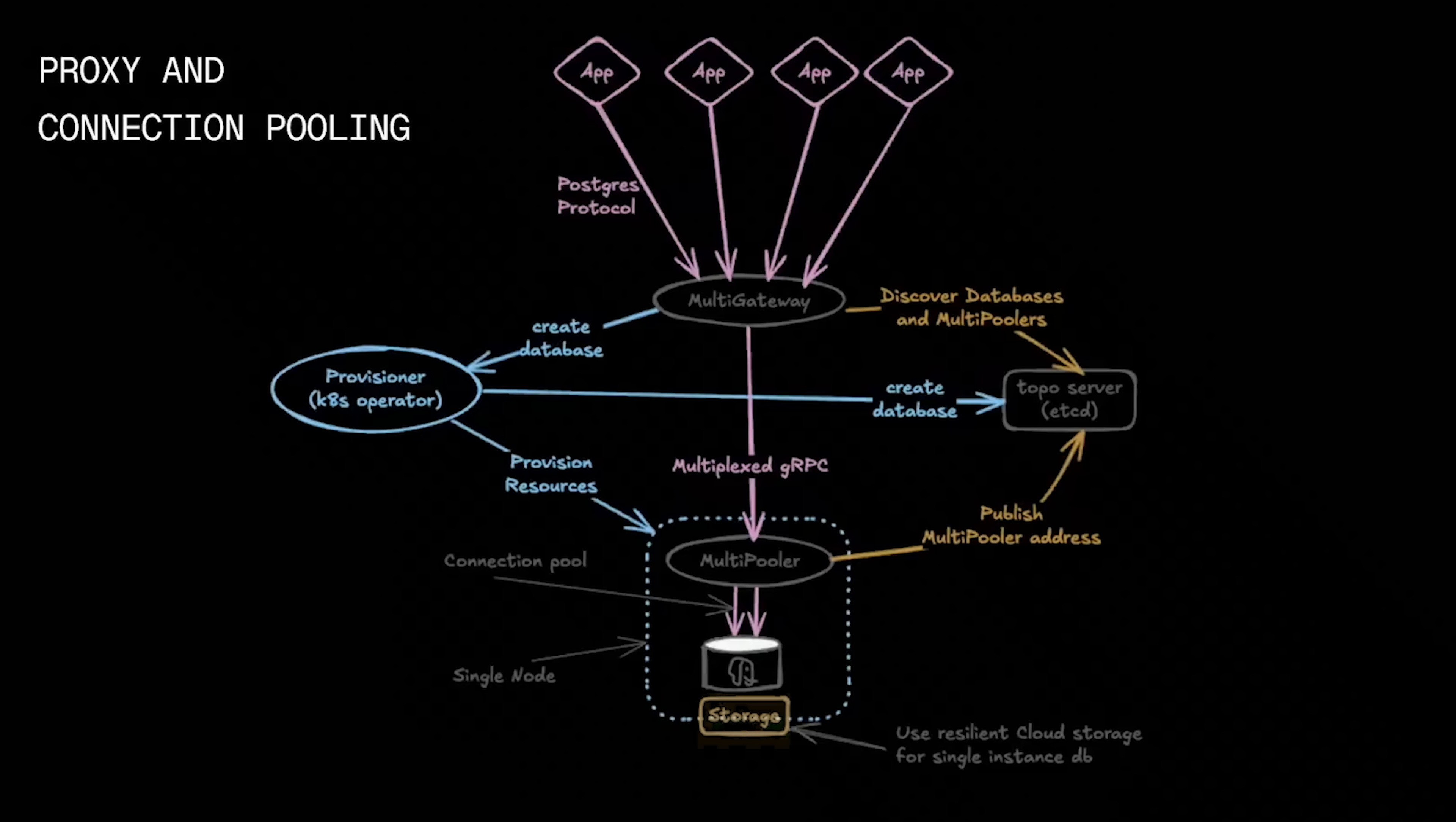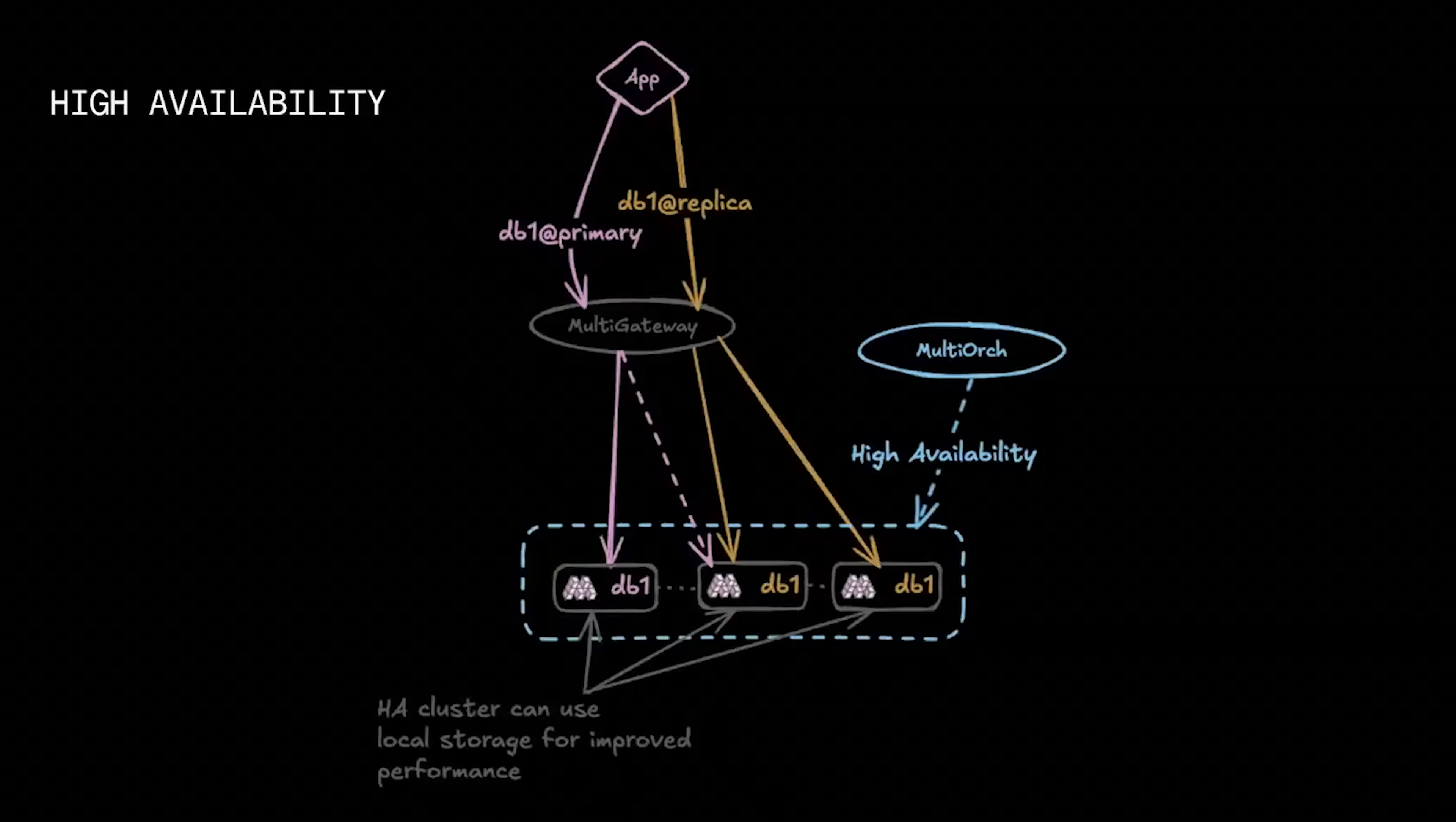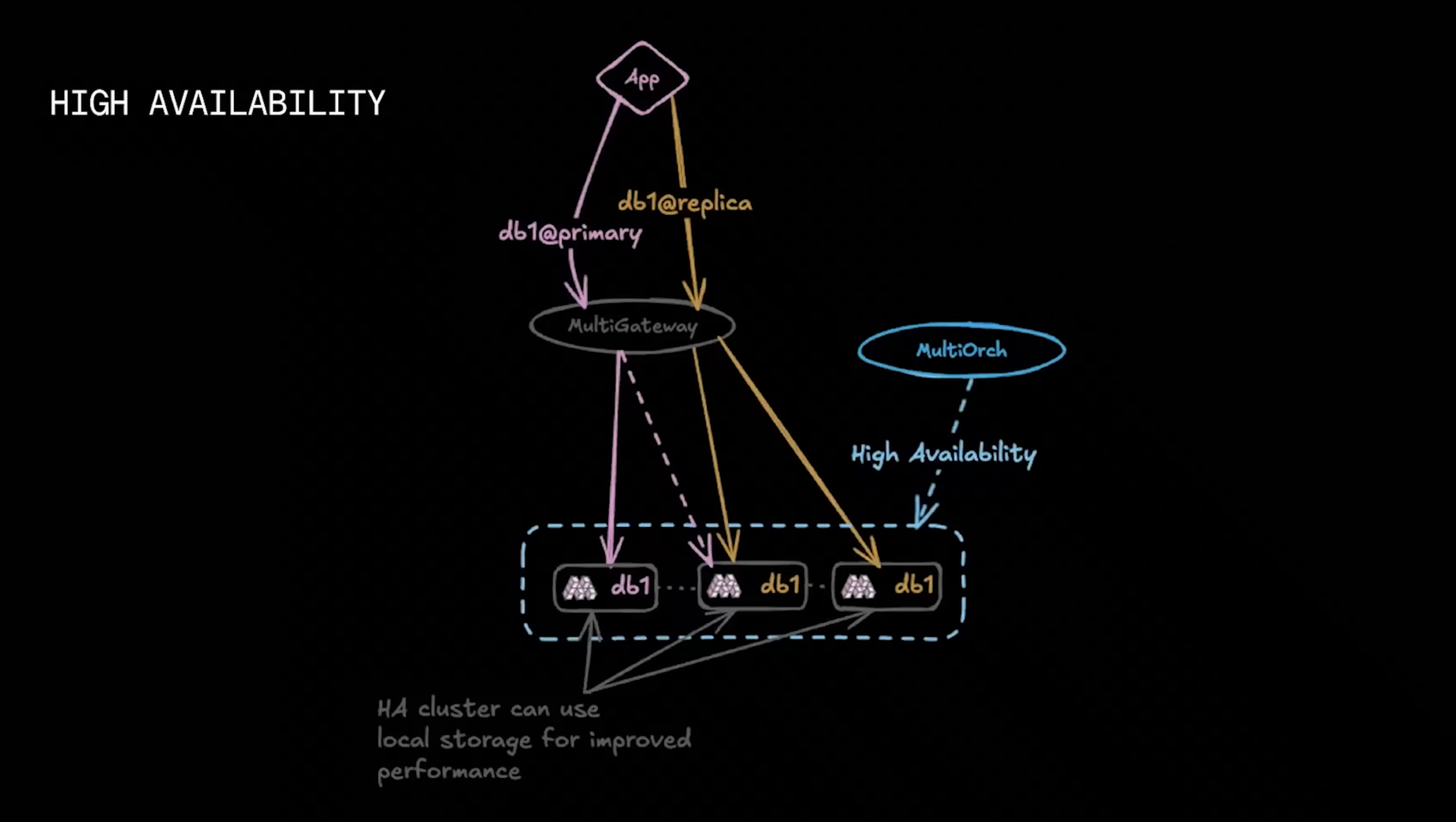So worst case scenario, you restart your Postgres instance and you continue with serving traffic. Here we introduce another component called Multi-arc. Multi-arc stands for Multi-orchestrator. And what this will do is, if a primary fails, it will immediately fail over to one of the standby replicas and continue to serve traffic. This sounds very simplistic, but it is one of the hardest problems in computer science, because this is actually a consensus problem. And we have beaten this problem to death.